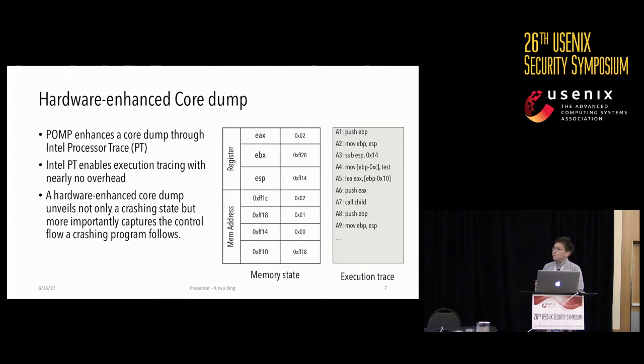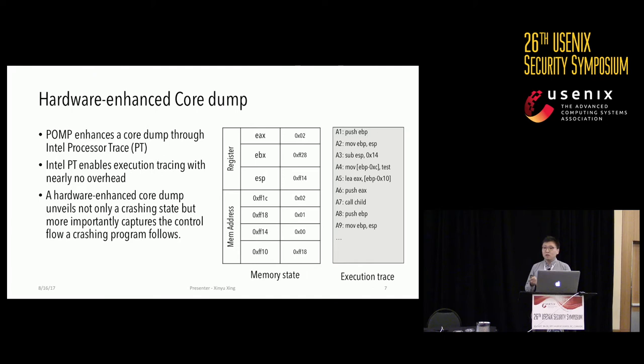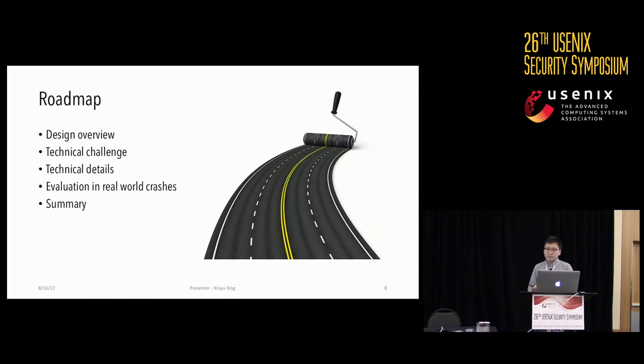In this work, we enhance the core dump with Intel Processor Tracer — a new hardware feature in modern CPUs. With Intel Processor Tracer, we can trace program execution and integrate the execution trace into a conventional core dump with nearly no overhead. With this, we can not only extract the crashing state but also capture the control flow of a crashing program.